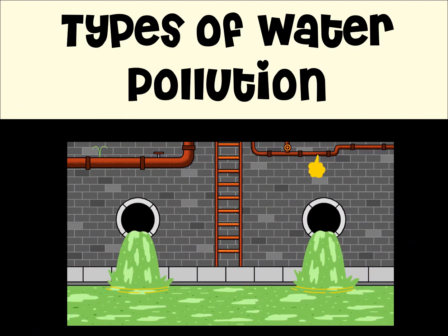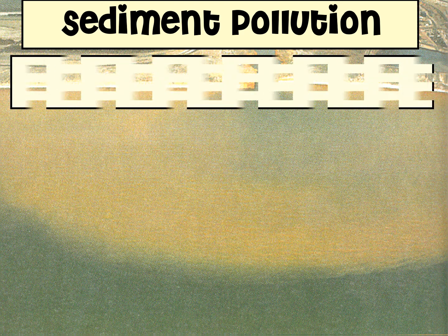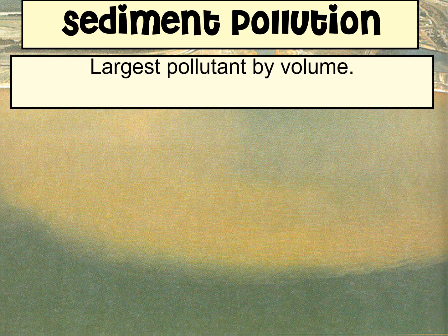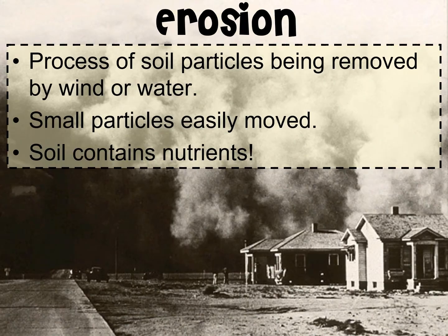Now we're going to look at the different types of water pollution. Our first category is sediment pollution, which is really just dirt or soil being placed in the water. It is the largest pollutant by volume and it's usually placed in the waterway because of erosion. Erosion is the process where soil particles are moved, usually by wind or water, into an area. Smaller particles tend to move more easily because they're lighter and can be carried by wind or water.